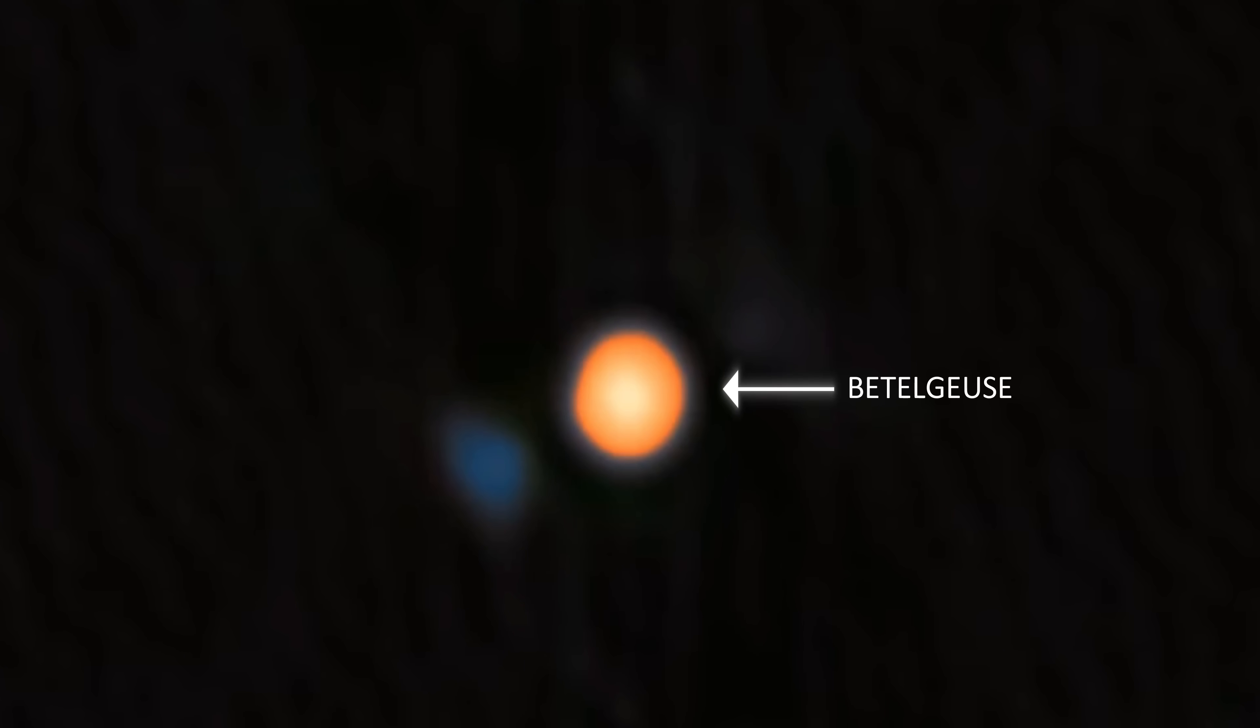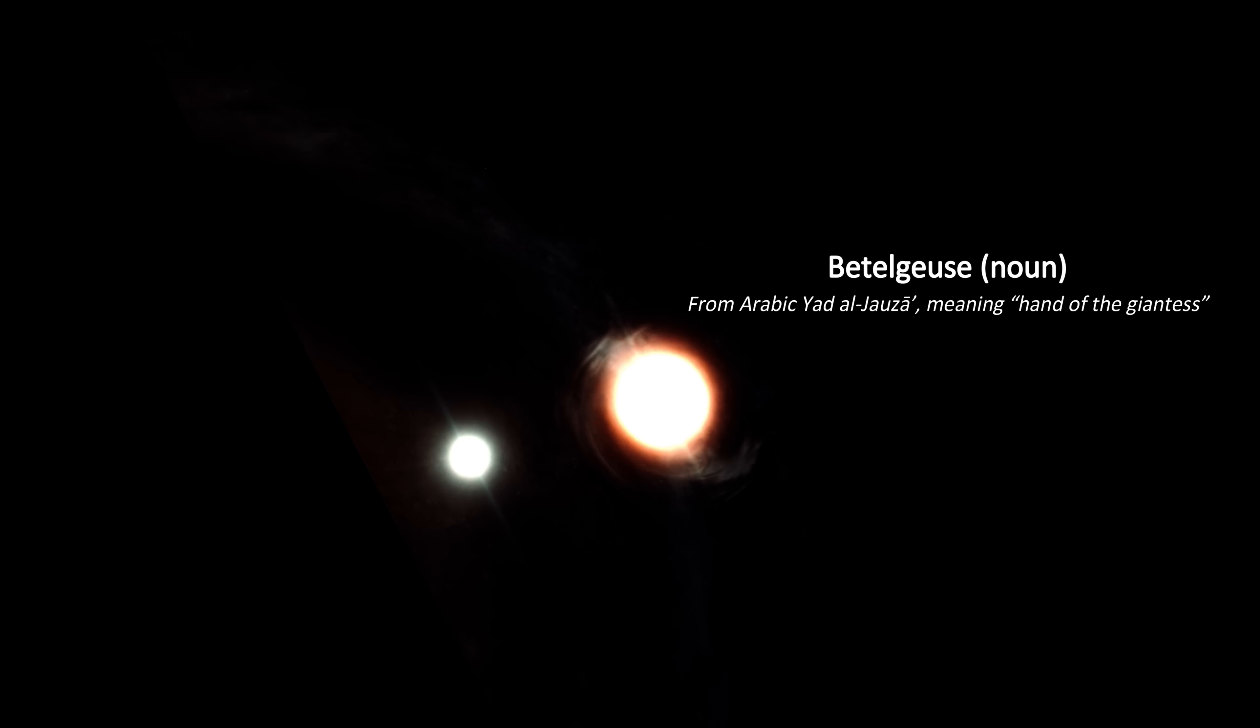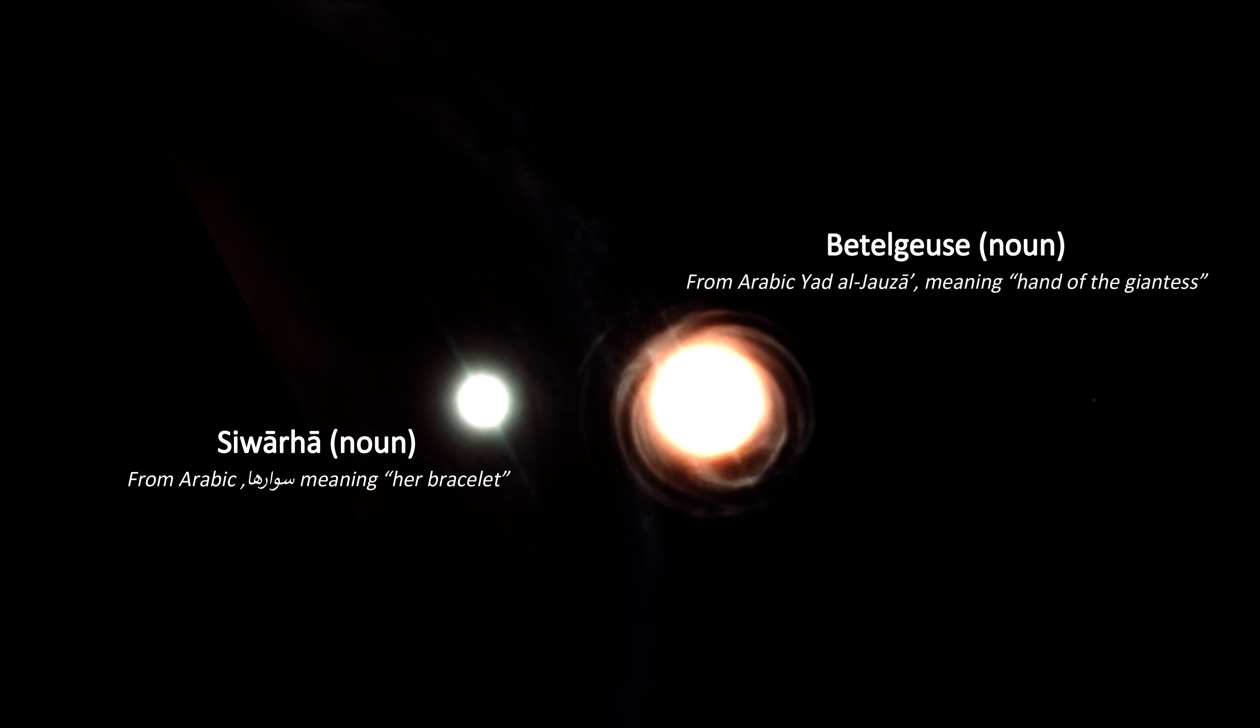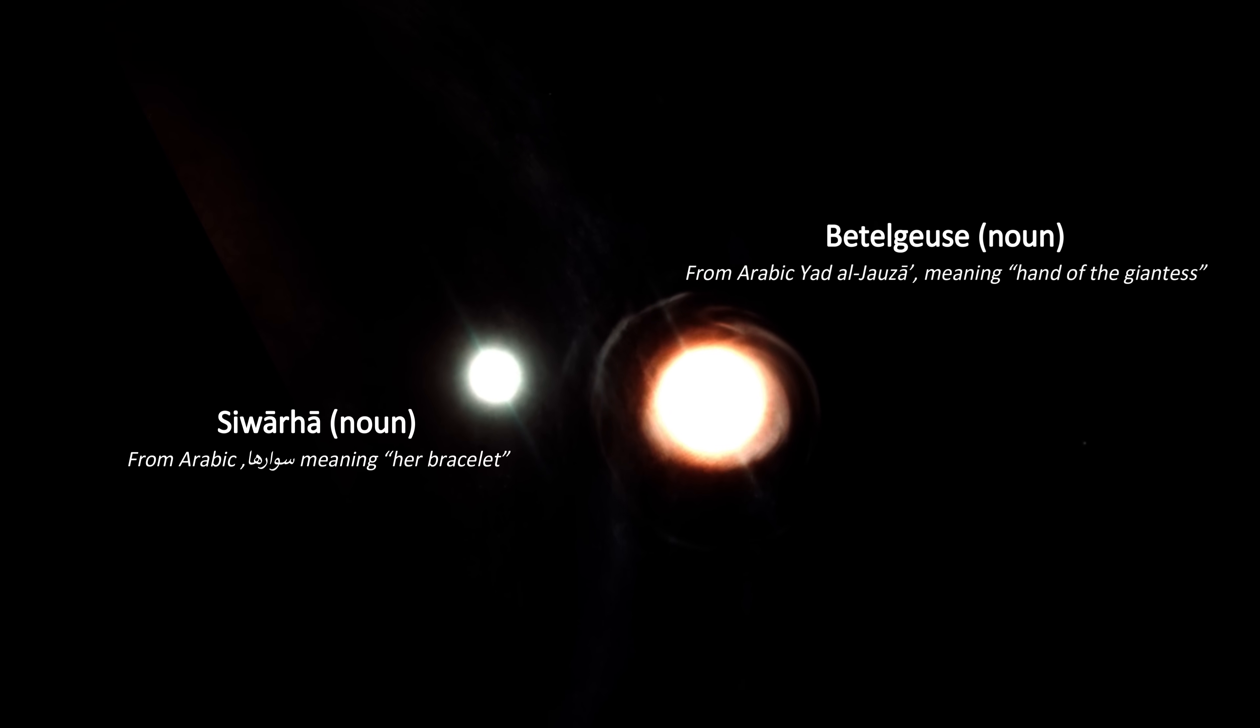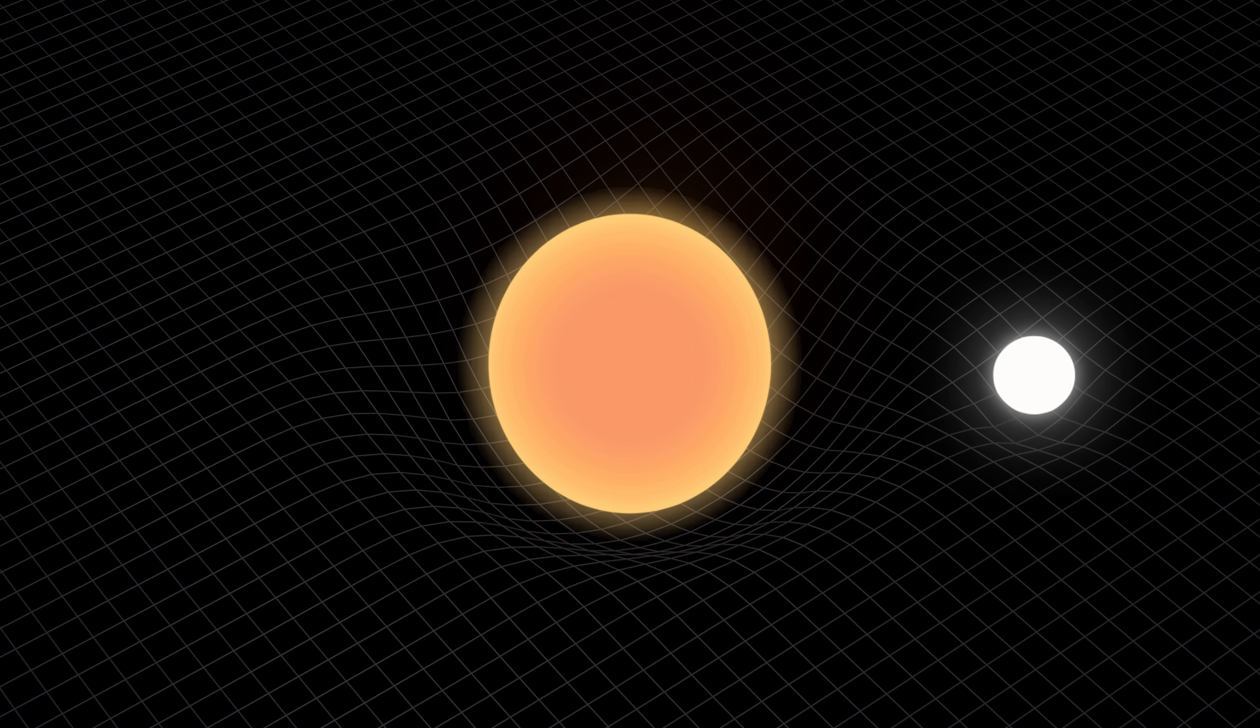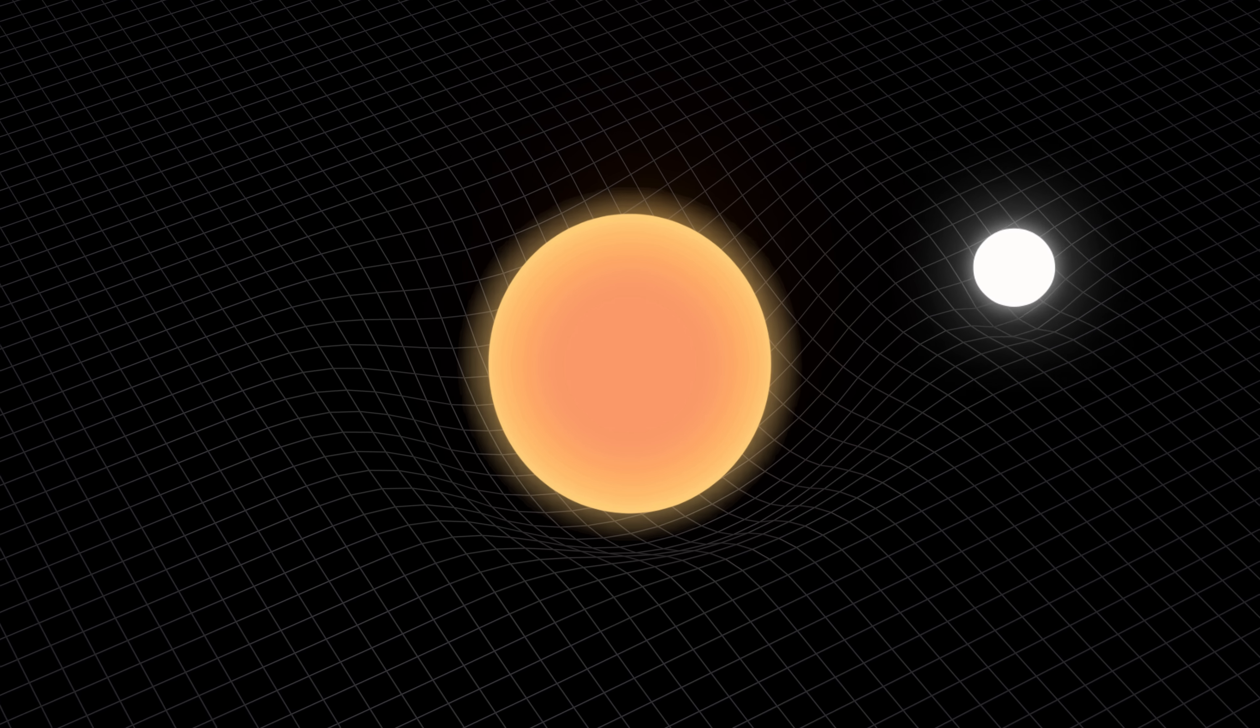This glowing orange orb is Betelgeuse, and this faint blue streak is its newly discovered buddy. Betelgeuse, which means hand of the giantess in Arabic, now officially has a companion that a team of astronomers has proposed naming Sawarha, which means her bracelet. Personally, I can't think of a better name to honor the star that orbits Betelgeuse.